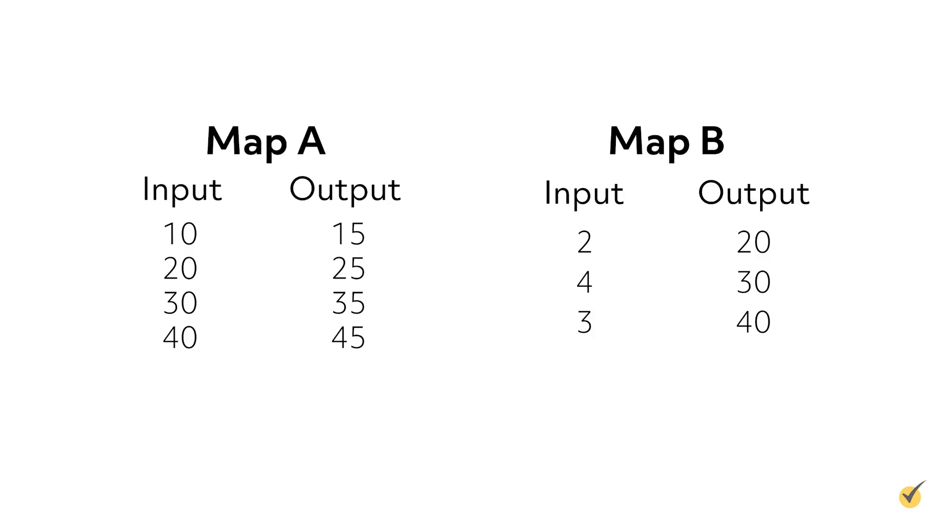Another convenient visual representation of a relationship is called a mapping, which shows a direct correspondence between the domain and range elements. Here are two examples. In map A, each input value maps to one output value. But in map B, the domain value 2 maps to two output values, 20 and 40. This simple image plainly shows the criteria to determine whether the relation given is a function. By definition, a relation is defined as a function if each element of the domain maps to one and only one element of the range.